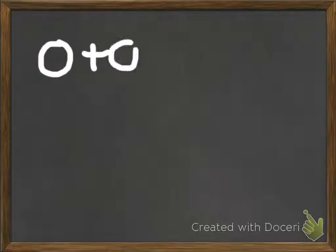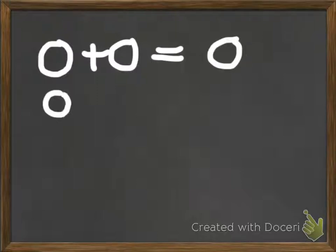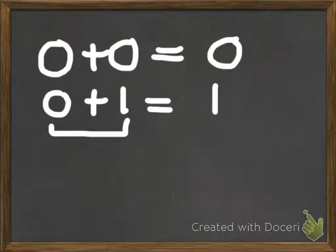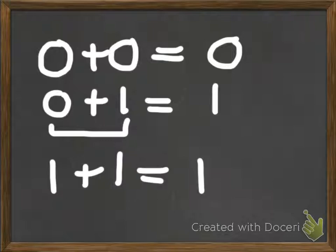Let me go over a few rules you should have observed from that example. If you're adding two binary digits: zero plus zero equals zero; zero plus one equals one — and the order doesn't matter, one plus zero is still one; but one plus one gives you a one-zero, meaning zero with a one carried over. Keep these simple rules in mind and binary addition should be pretty straightforward.